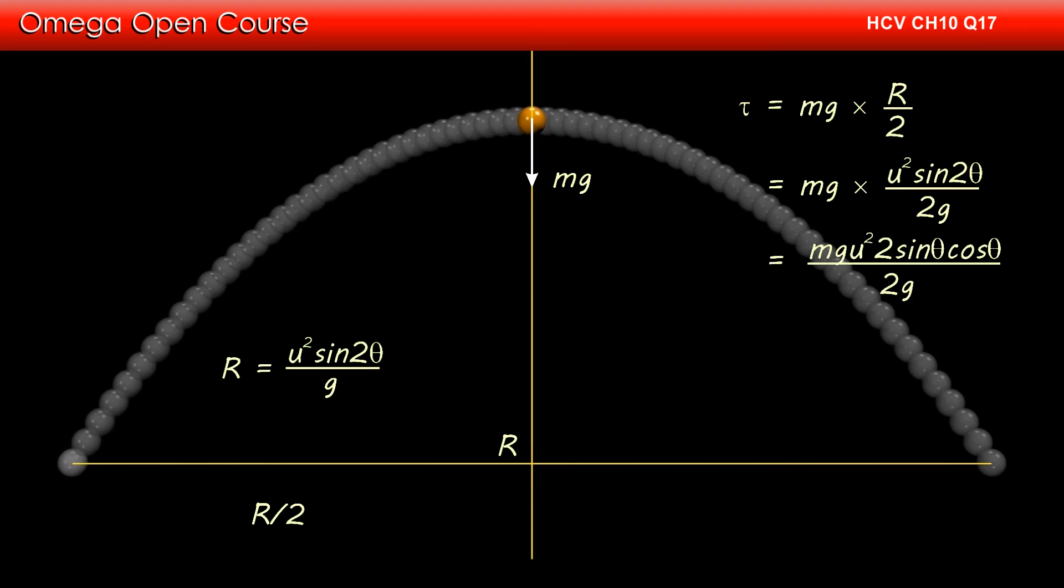Putting sine 2 theta as 2 sine theta into cos theta and simplifying, we get torque is equal to mu squared sine theta cos theta. Since about the point of projection, the gravity rotates the ball in clockwise direction, therefore the direction of torque is into the plane. This is our answer.